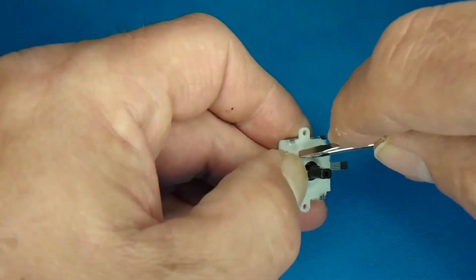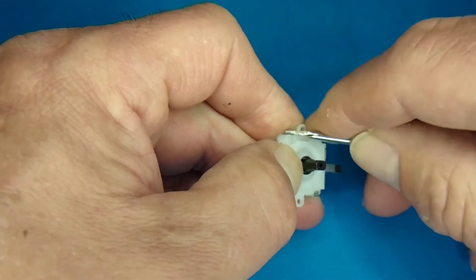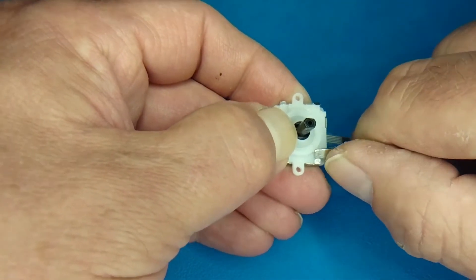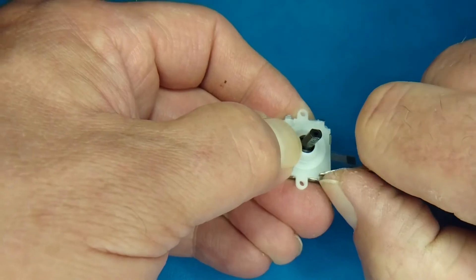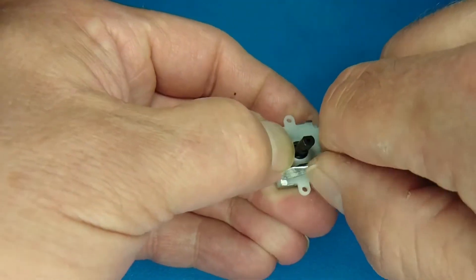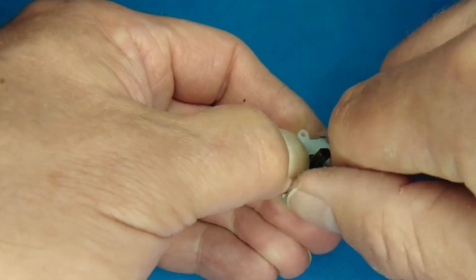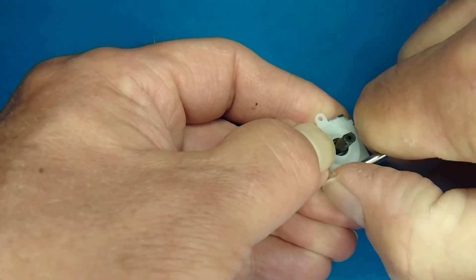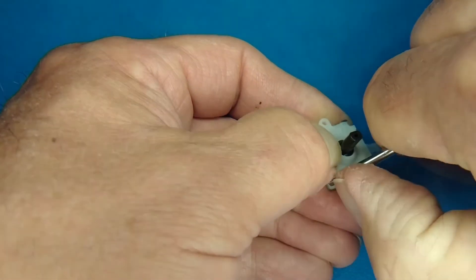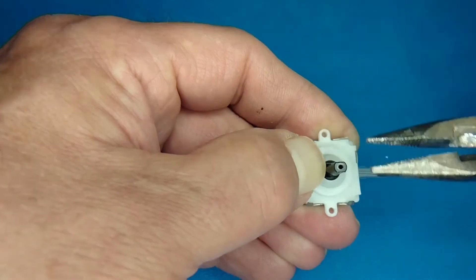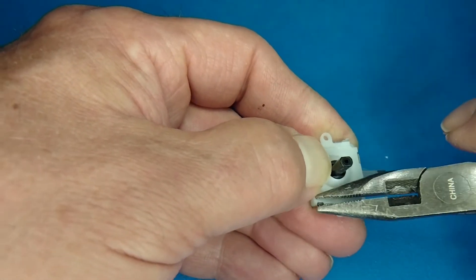And I'm just using a screwdriver here. I'm going to bend up the four tabs around the nylon piece there. And I'm just going to straighten them up so it gets on and off without getting in the way. I'll straighten them up with some needle nose to get them a little bit straighter, but that's just to clean it up.